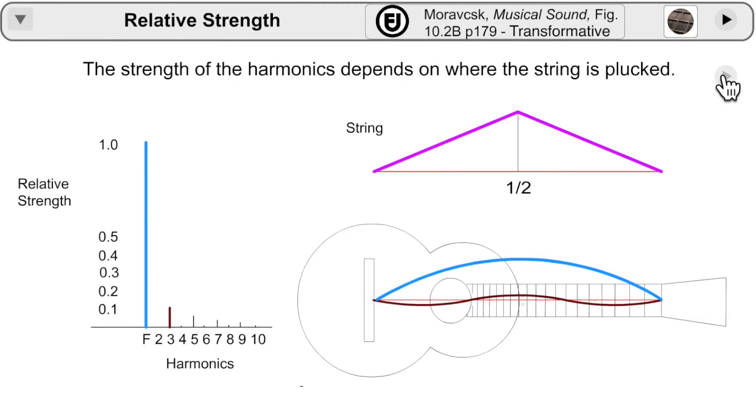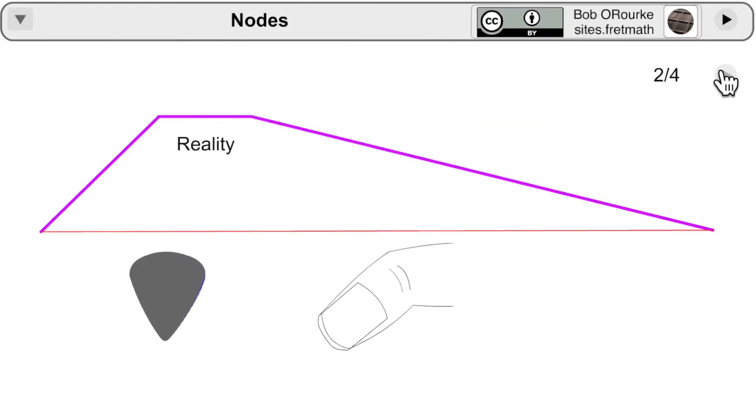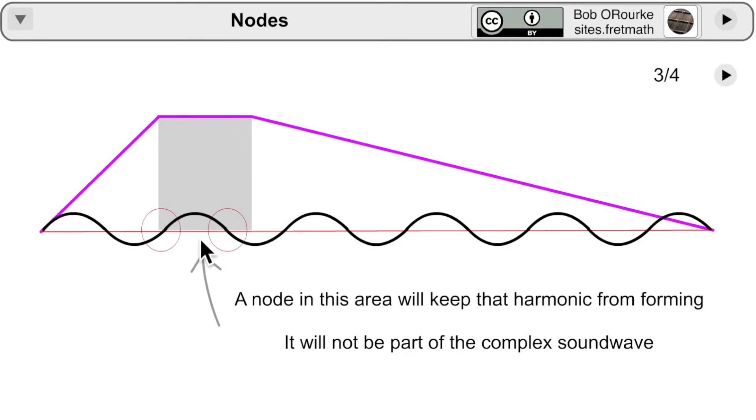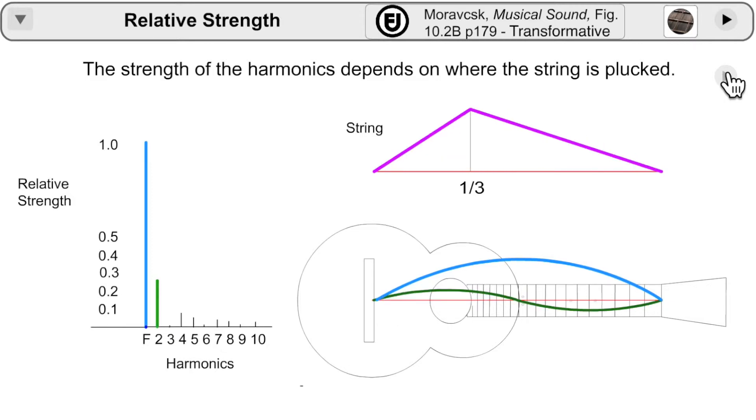And now for the relative strengths of the harmonics. Note first that the harmonic will not form at all if any of its nodes would interfere with the plucking motion itself. At the midway point, the second harmonic does not form. One third of the way along the string and the third harmonic will not form, etc.